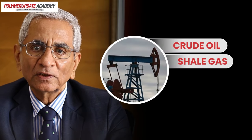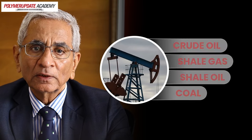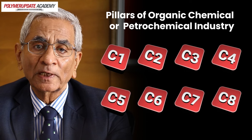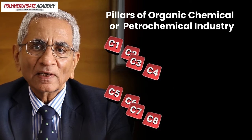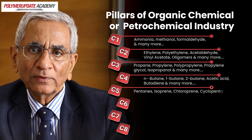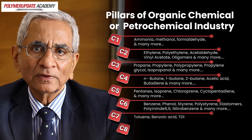Currently, the basic organic chemical industry uses eight basic building blocks derived predominantly from petroleum feedstocks. This course discusses the different feedstocks such as crude oil, shale gas, shale oil, and coal. The eight building blocks are classified based upon the number of carbon atoms they possess: C1, C2, C3, C4, C5, C6, C7, and C8.